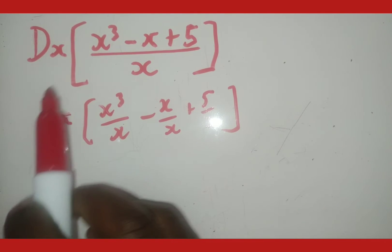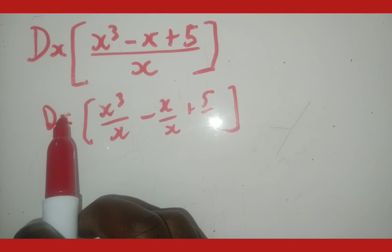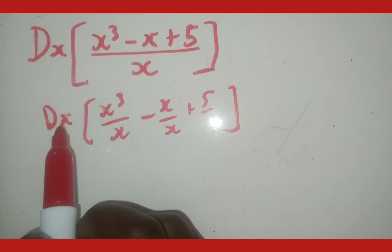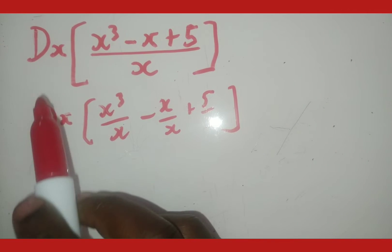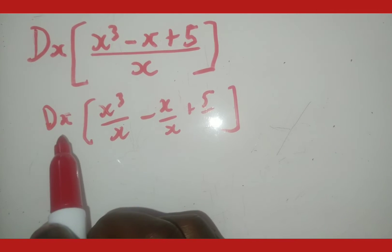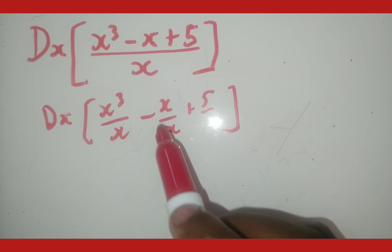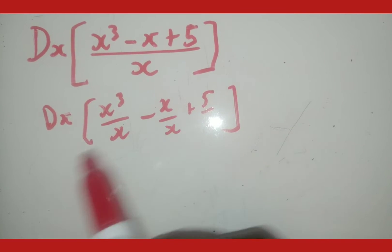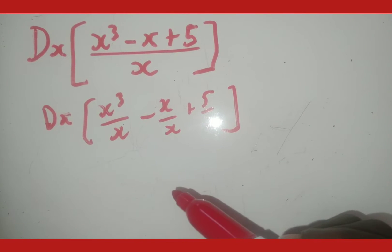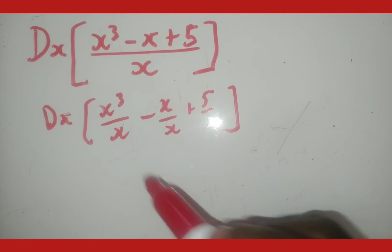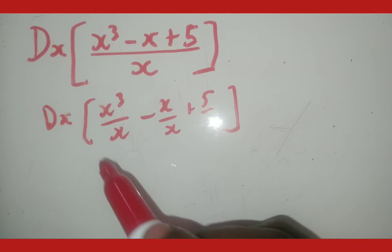This dx will remain throughout, only removed on the step where we derive. As long as we're still manipulating what's inside the bracket, this dx is still going to remain. But when we reach the step where we now derive, that's when we remove the dx and the bracket.